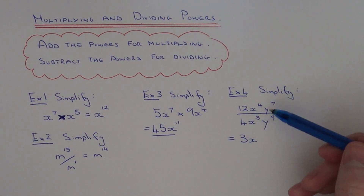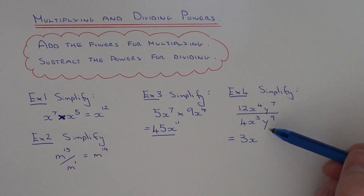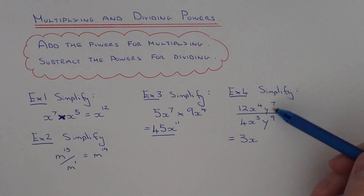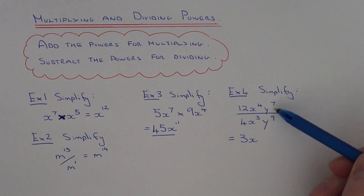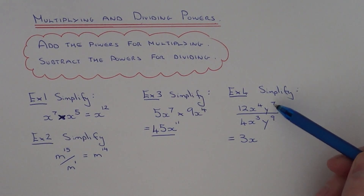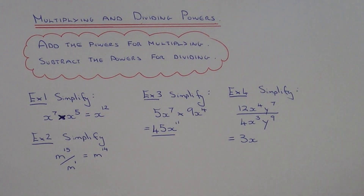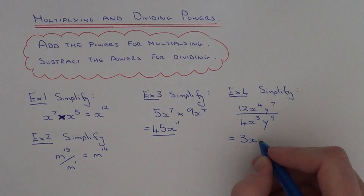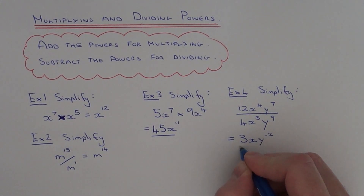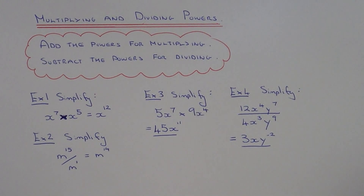Finally, we have y to the power of seven divided by y to the power of nine. Again we are dividing, so we subtract the powers. Make sure you do seven take away nine and not nine take away seven. Seven take away nine gives us minus two, so our power on y will be minus two, and that is your final answer.